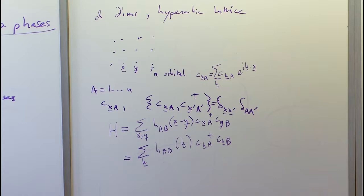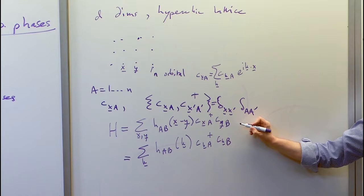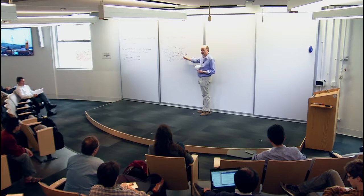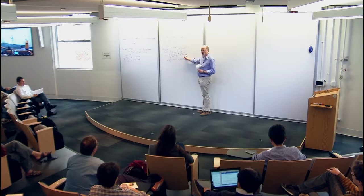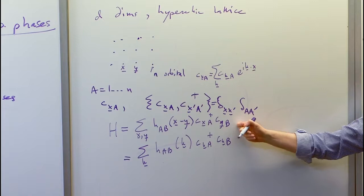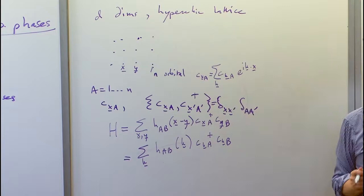I'm going to focus on the simple case of number-conserving Hamiltonians — particles hopping — which leads to the most basic class of free fermion systems. Other cases, such as superconducting systems or BCS paired states, correspond to additional particle-hole-like symmetries, and you can always map those onto number-conserving systems by doubling the system, obtaining something of this form with conditions on the matrices. So the simplest case is really this one, and everything else is related to it.